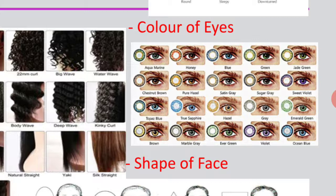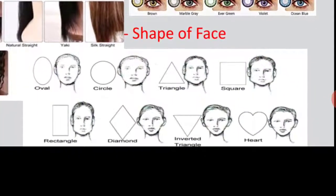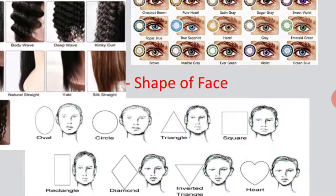Then there is the shape of the face. The shape of the face is basically interrelated with geometrical shapes, which are oval, circle, triangle, square, rectangle, diamond, inverted triangle and heart shape.